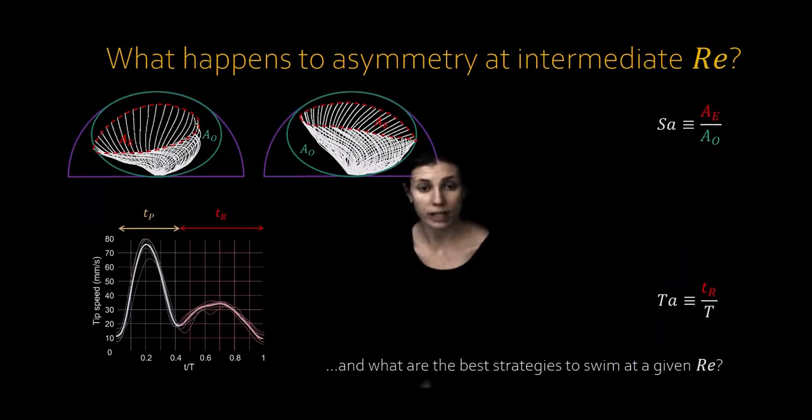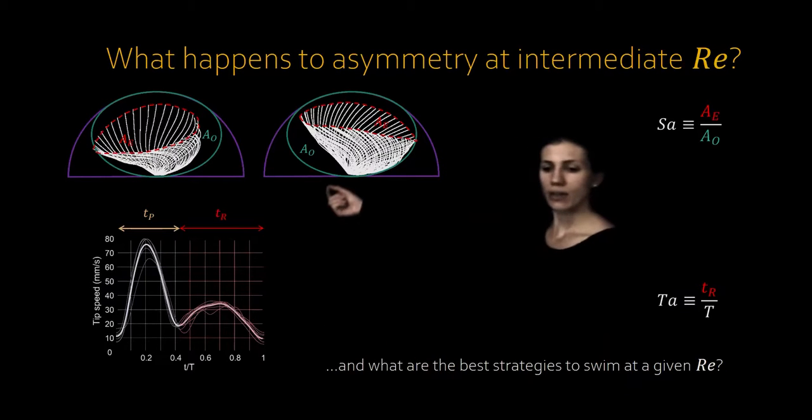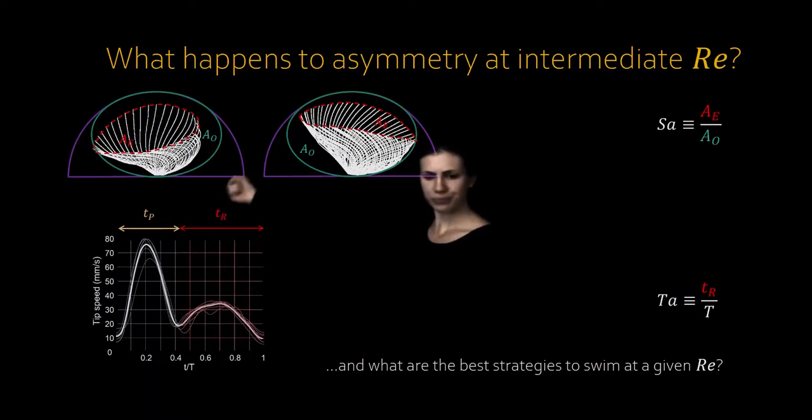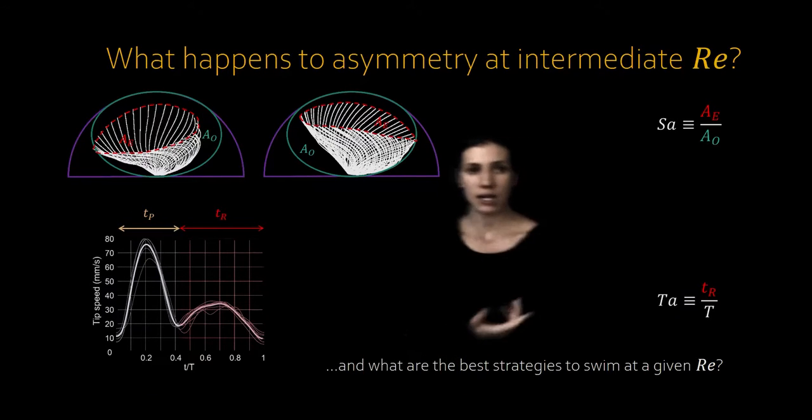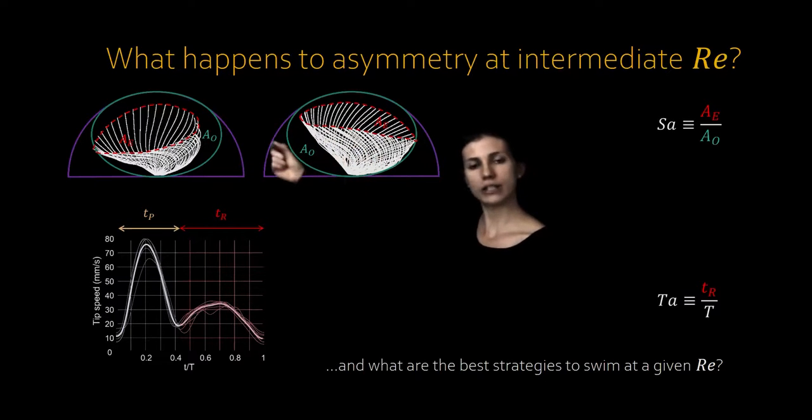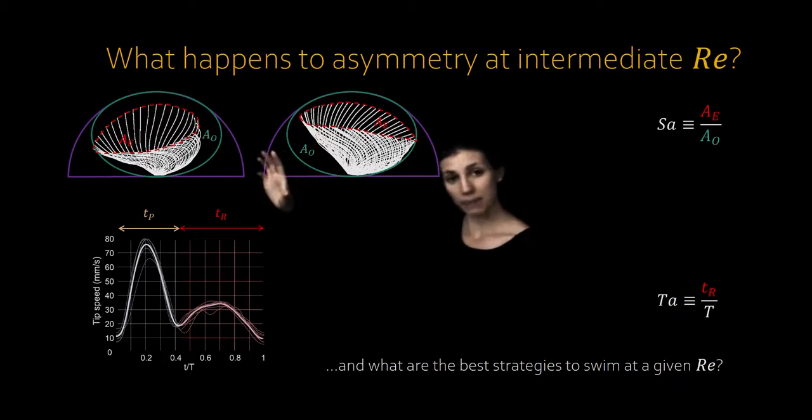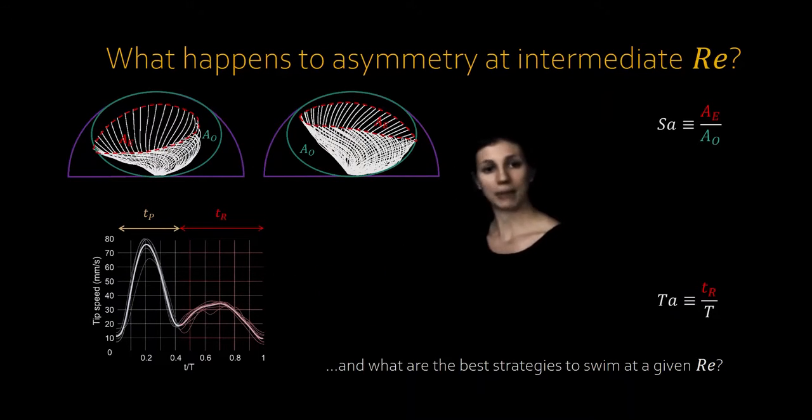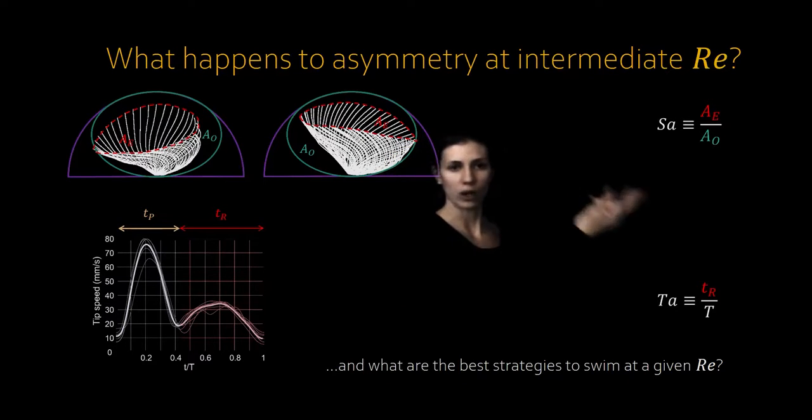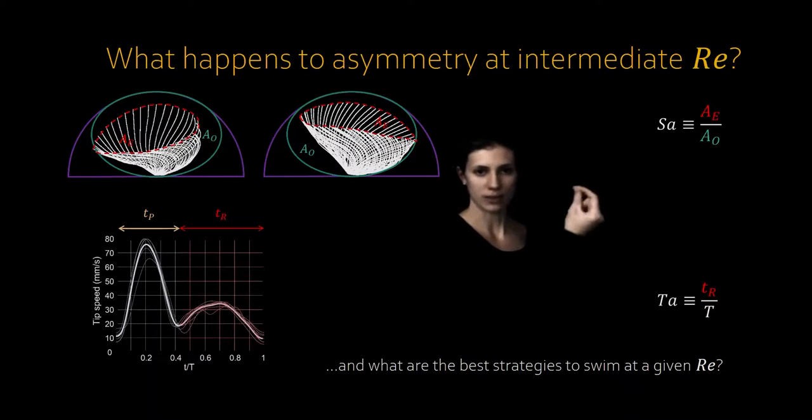In order to do that, we're going to need to quantitatively define two different parameters. Here you can see these white lines are the traces of a ctene plate beating over one power recovery cycle. We're going to find a spatial asymmetry parameter, SA. We define that as the area that is traced out by the tip of the ctene as it goes through one cycle, divided by the ellipse that is inscribed in the half circle whose radius is the ctene length. A value SA of approaching one means the stroke is very asymmetric. A value approaching zero means that the stroke is fairly symmetric.